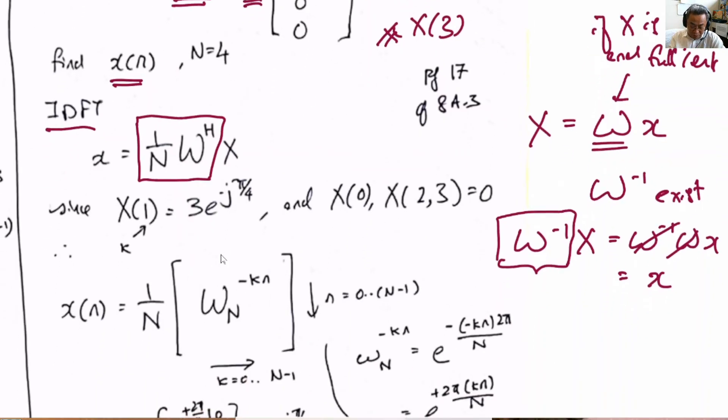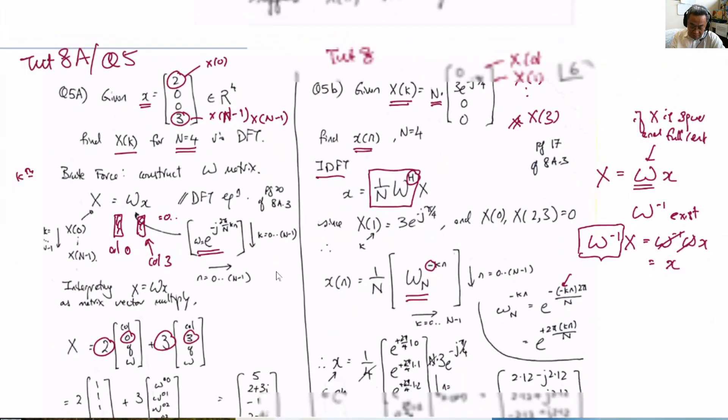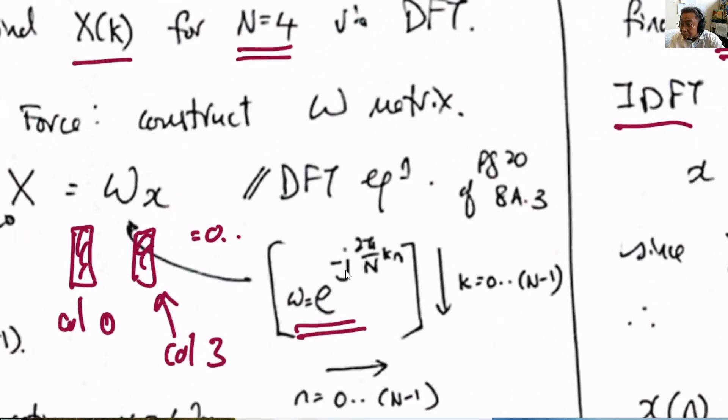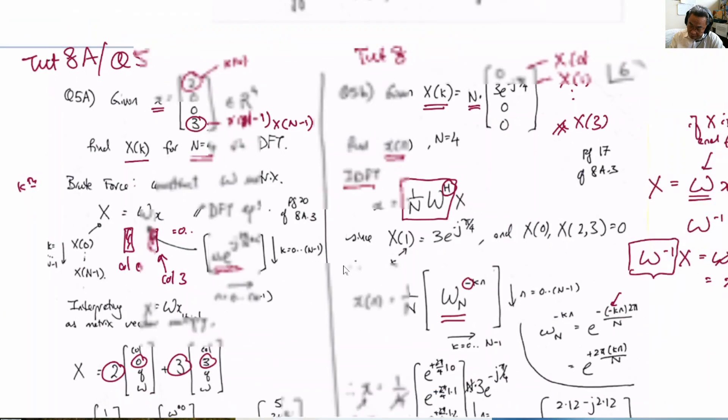What we are to do now is introduce this notation: 1 over N here and W^H here. W^H means the Hermitian transpose of W, conjugate transpose of W. We have already introduced what W is, so W^H is simply the conjugate. Because the matrix is symmetric NK, it doesn't matter. Now the minus will be introduced in the notation of W.